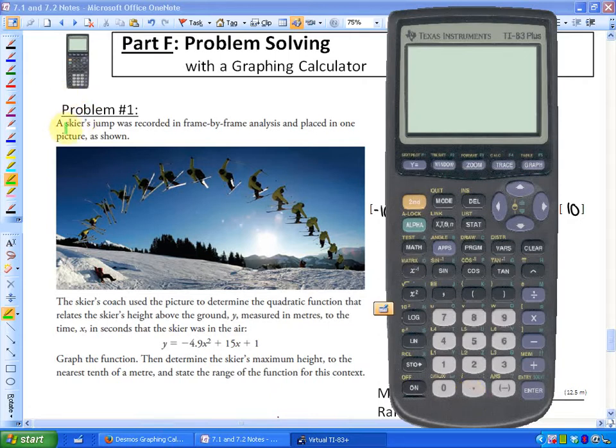So problem one says the following. A skier's jump was recorded in frame-by-frame analysis and placed in one picture as shown. So they took a whole bunch of snapshots of a skier and they analyzed it. The skier's coach used the picture to determine the quadratic function that relates the skier's height above the ground measured in y, measured in meters, to the time x in seconds that the skier was in the air.